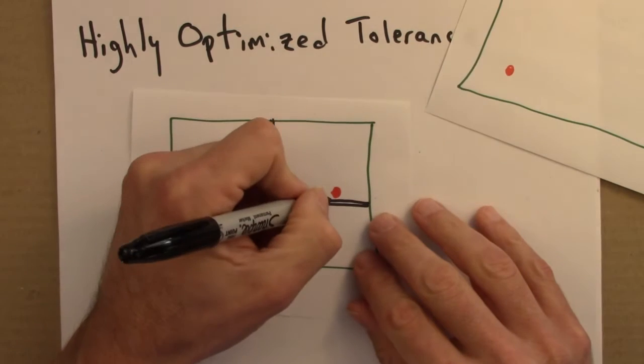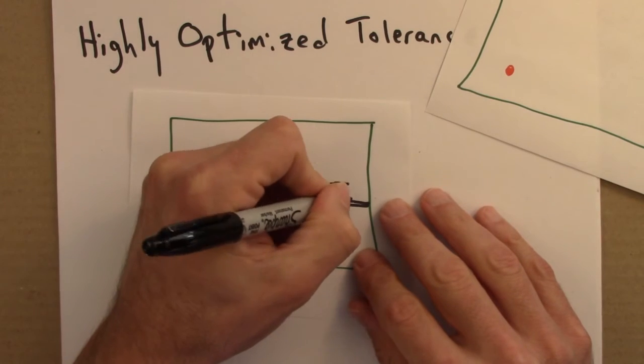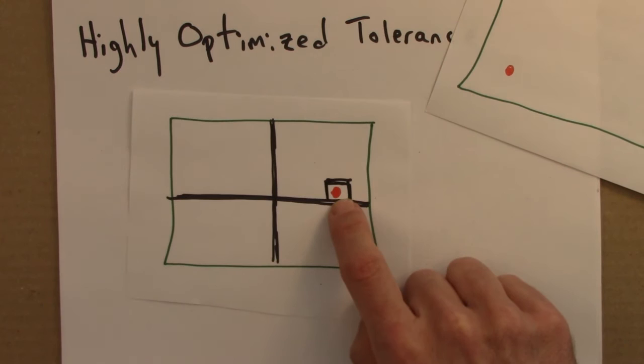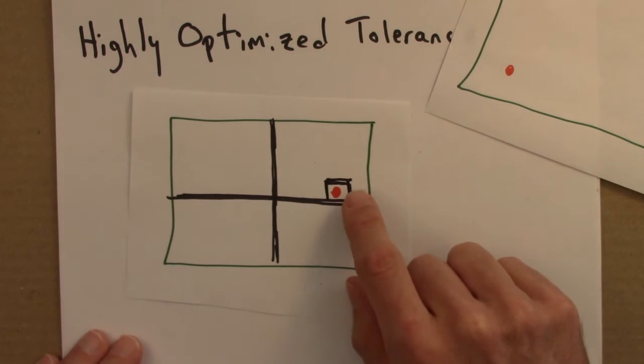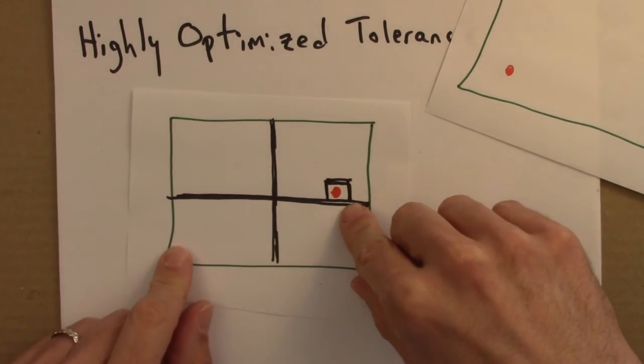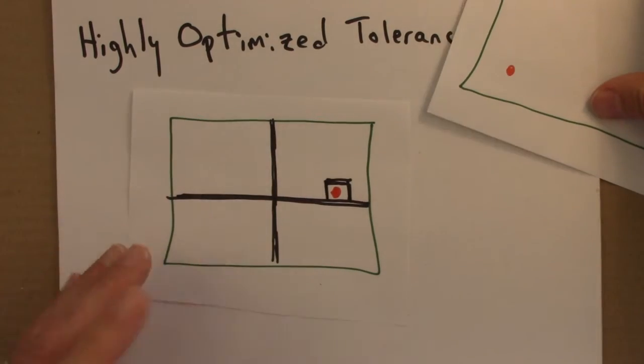Another idea would be, what if I know the spark's going to hit here? I'll just put a fire break right around that. Then no big deal. However, the picture in this model, and it's an accurate one, is we don't know where fires are going to start, where lightning's going to strike. We can't predict that.